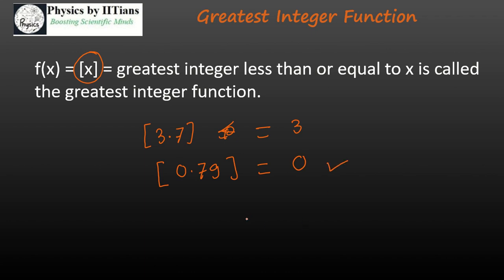Now let's see what is the greatest integer for a negative number. So if you have a negative number, let's suppose negative 2.7, the greatest integer will give you a value less than the particular value of x given here. The number is negative 2.7, and if you want a number that is less than this particular number but is an integer, it will give you negative 3. So negative 3 is less than negative 2.7. So this is the answer.